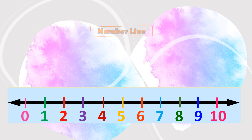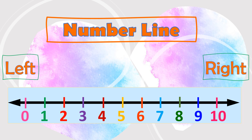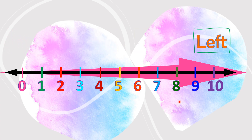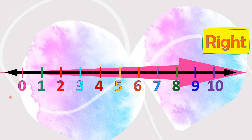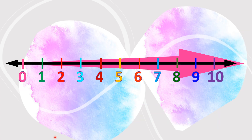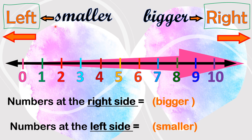When we compare numbers, we may use a number line. This is the left side of the number line, and this is the right side. On this horizontal number line, numbers are written from 0 to 10. The numbers increase as one moves from left to right. As we move further to the right of 0, the number increases. Numbers at the right side are bigger, while numbers at the left side are smaller.